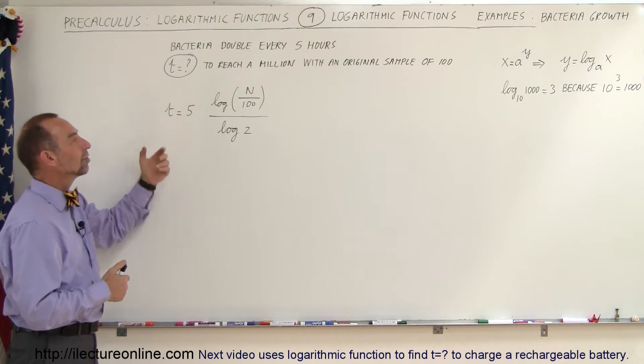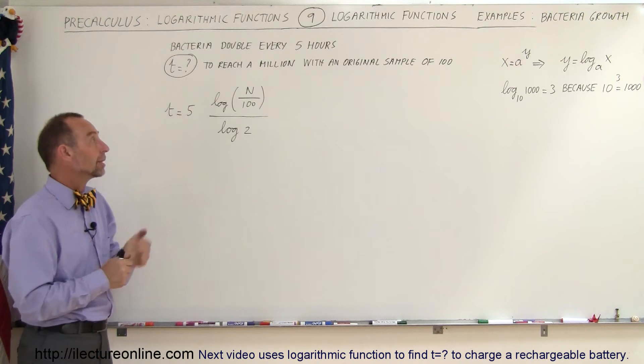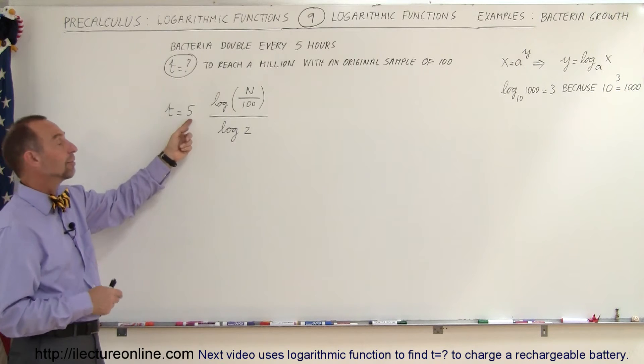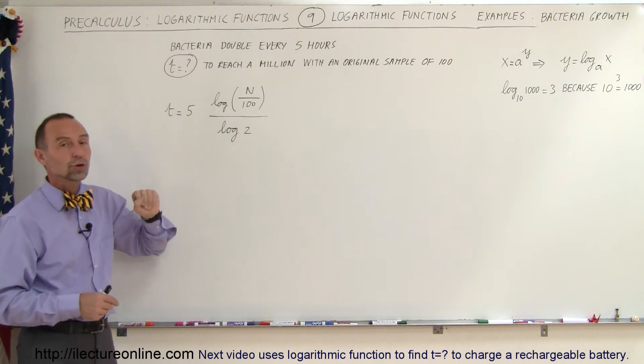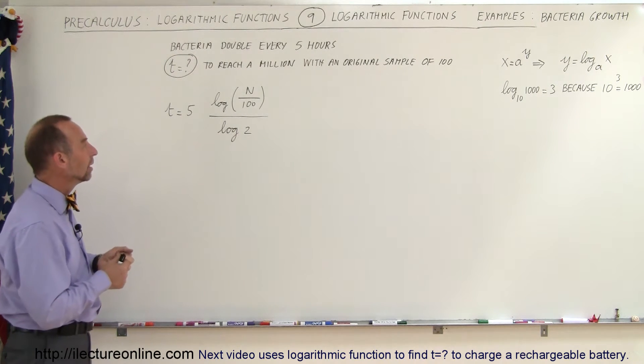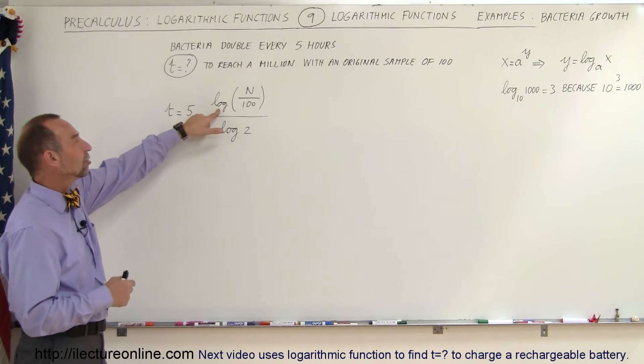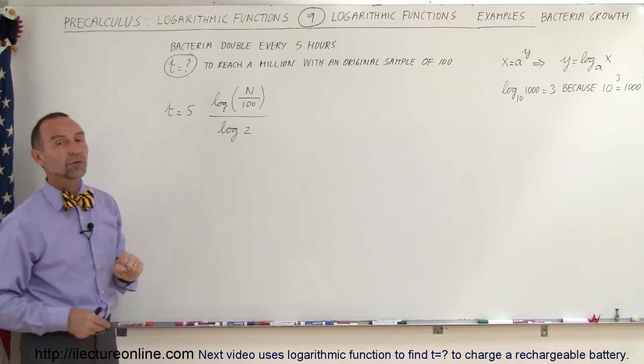How long will it take to reach a million of the bacteria? The equation we use for that is t equals 5, that would be doubling every five hours. The log of base 10 of 2 would also indicate doubling every five hours, and so we then have the relationship between the amount that we want and the amount that we started with.